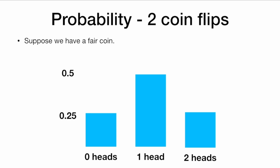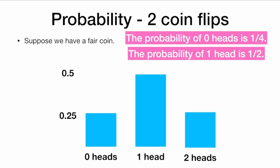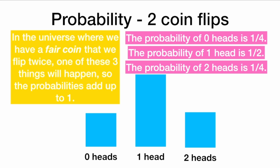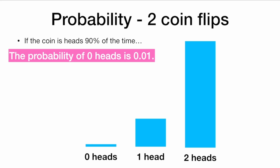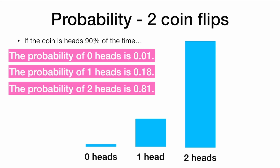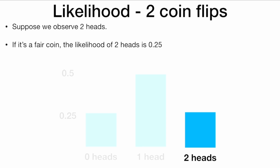Let's look at another example. This time we're flipping two coins. Suppose we have a fair coin. Then I can talk about the probability of zero heads being one-fourth, the probability of one head being one-half, and the probability of two heads being one-fourth. These are probabilities — these numbers add up to one, and in the universe where we have a fair coin that we flip twice, one of these three things will happen. But if the coin lands heads 90% of the time, the probability of zero heads is 0.01, the probability of one head is 0.18, and the probability of two heads is 0.81. In the universe where we have an unfair coin that we flip twice, one of these three things will happen, so the probabilities add up to one.